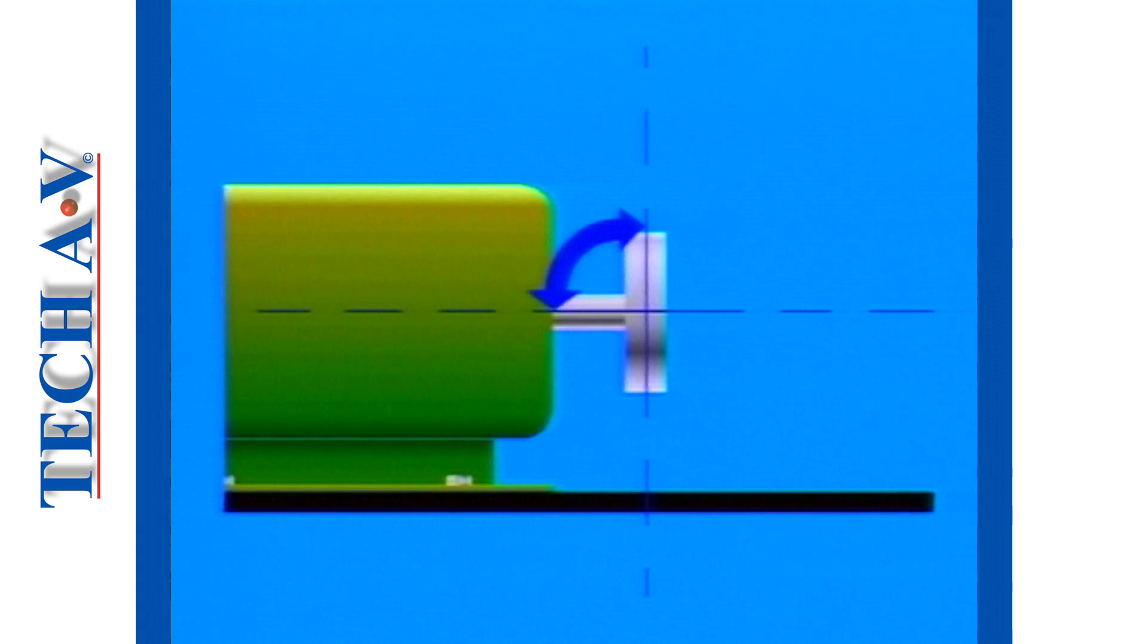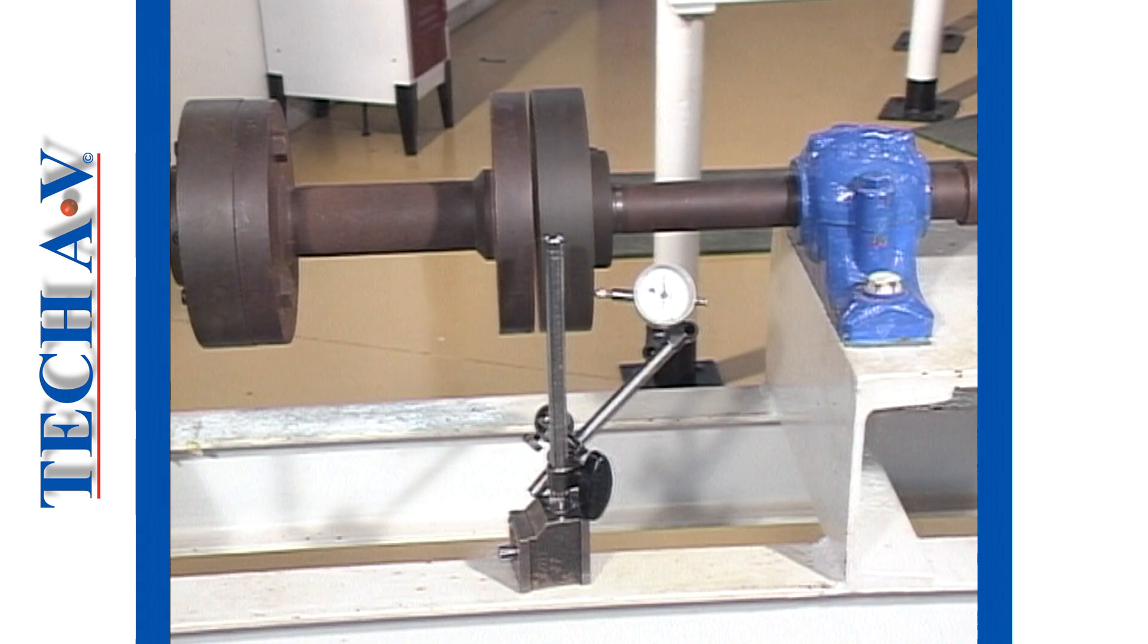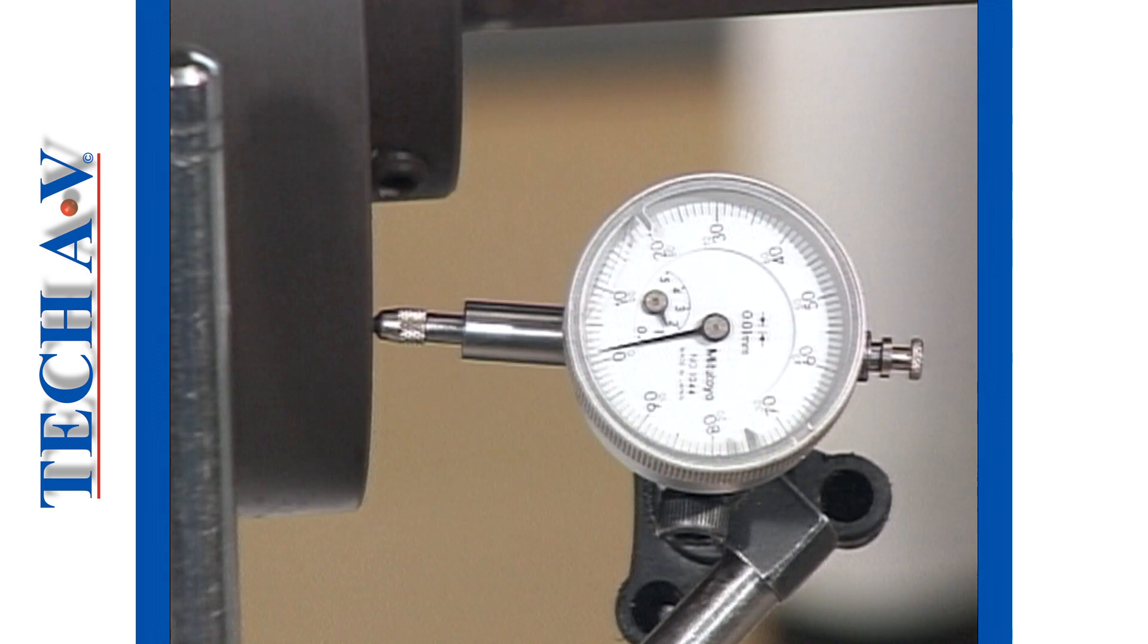Once we have attained a common axis, then we can look to the coupling to check if each half-coupling runs concentric, or true, to the shaft. This is achieved by checking the various run-out factors using a dial-test indicator to assess whether the shaft runs true, and if the half-coupling runs true, both axially and radially.